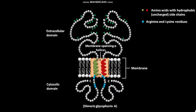Both the extracellular domain and cytosolic domain of glycophorin A are rich in charged residues and polar uncharged residues. The extracellular domain of glycophorin A is heavily glycosylated with carbohydrate side chains attached to specific serine, threonine, and asparagine residues.